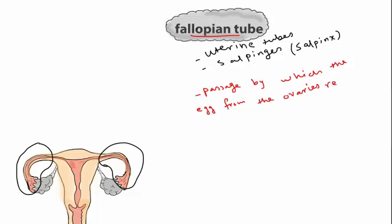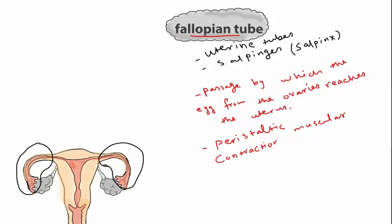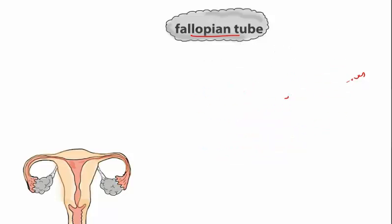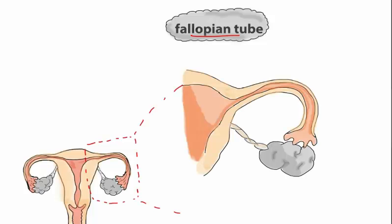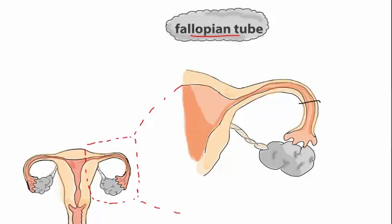The function of the fallopian tube is to serve as a passage by which the egg released from the ovary is transported to the uterine cavity using peristaltic muscular contractions. The end of the fallopian tube contains finger-like projections called the fimbria, which move and sweep the ovum released from the ovaries.